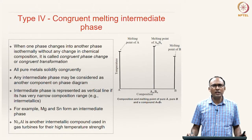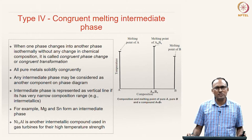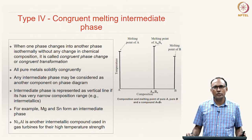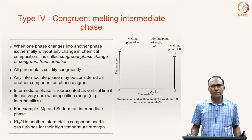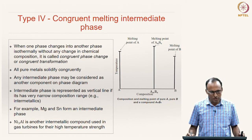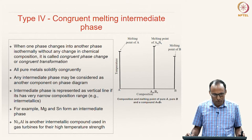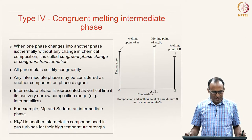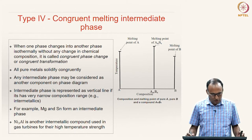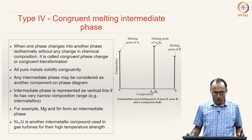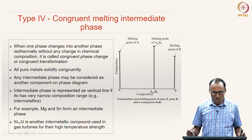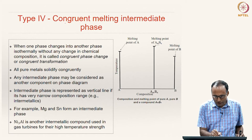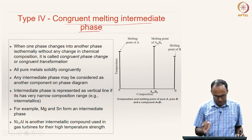Welcome back. In the last class we looked at the eutectic type of alloys, Type 2 and Type 3, where we discussed the evolution of microstructure. Today we will look at Type 4 alloys. In this Type 4 alloy we will look at a special system called congruent melting—the formation of a congruent melting intermediate phase.